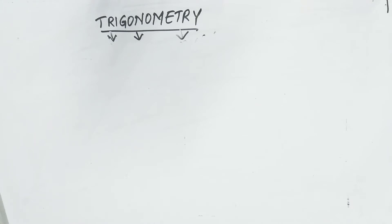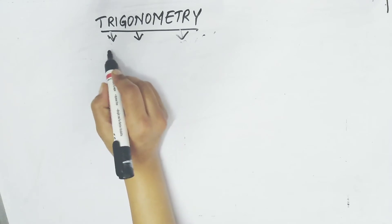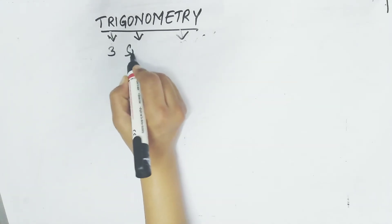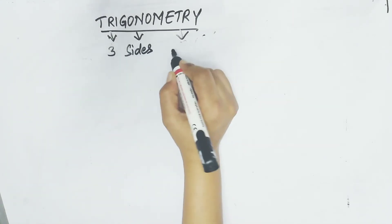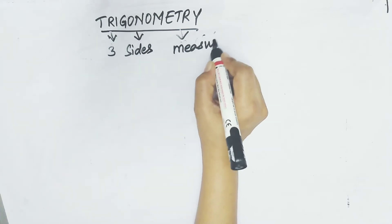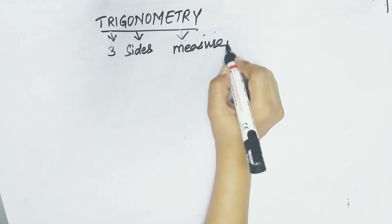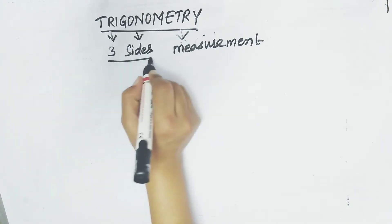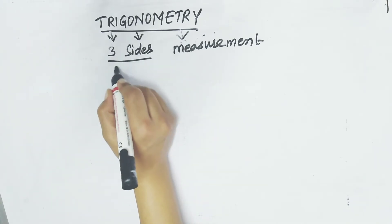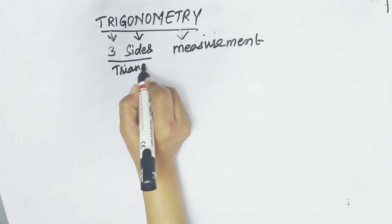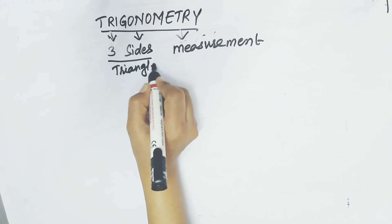Breaking down the word: 'tri' means three, 'gona' means sides, and 'metry' means measurement. So three sides means you get a triangle.